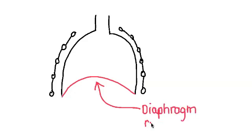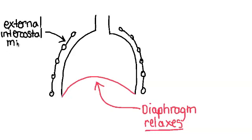Now looking at expiration, or air moving out of the lungs, you have a curved diaphragm which means it is relaxed. The external intercostal muscles are also relaxed, and these two things combined mean the ribcage is going to fall.